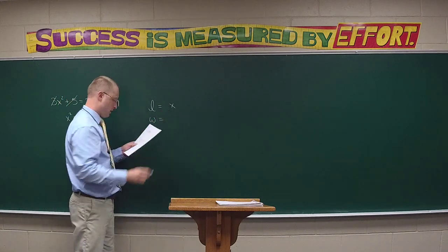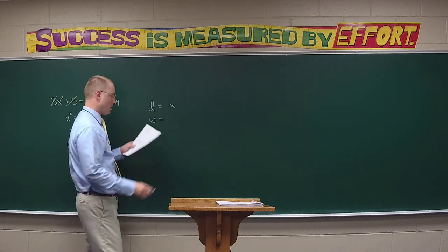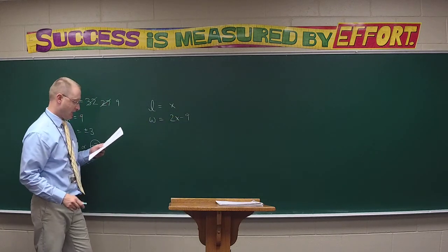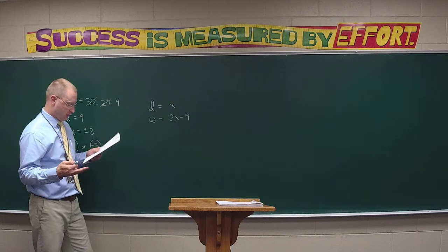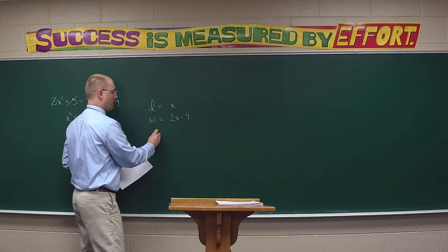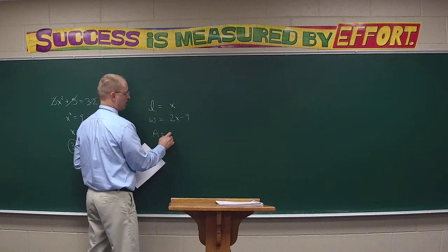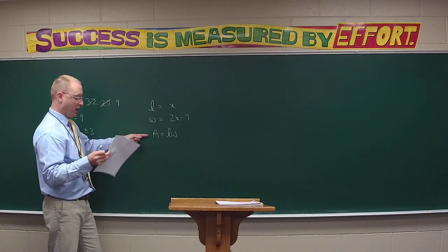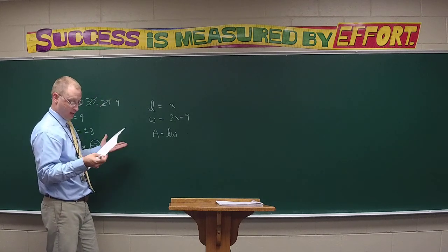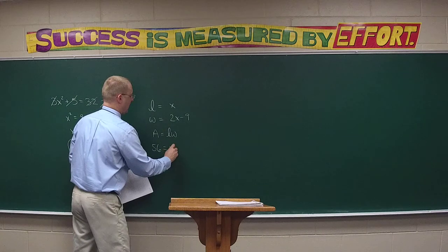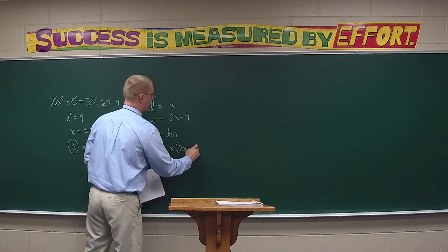Which do we represent as x? The length. How do we represent the width? Two x minus nine. Nine feet less than twice the length would be two x minus nine. But it said the area is 56 square feet, so we have to remember that area equals length times width.